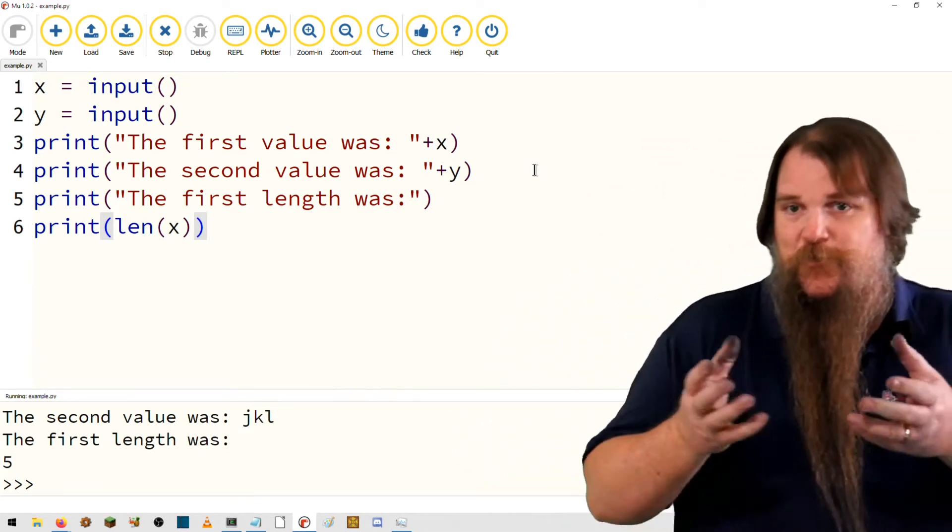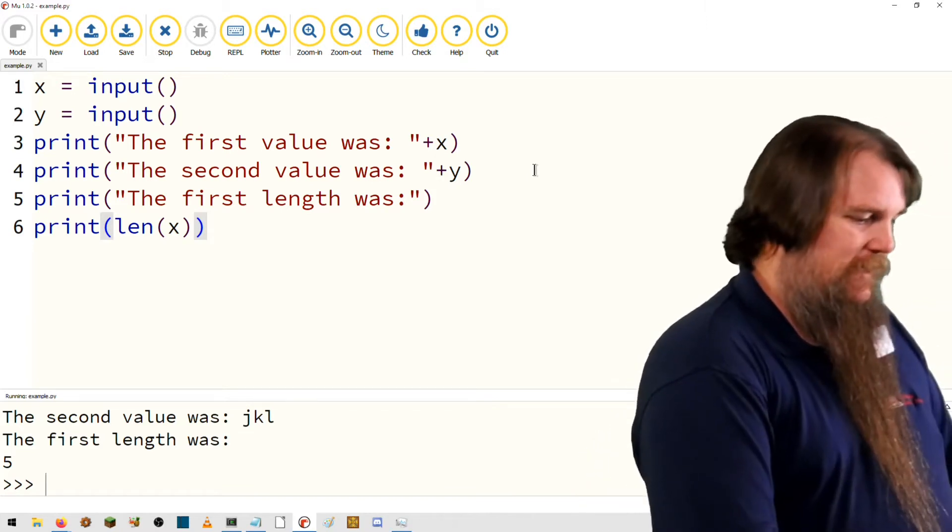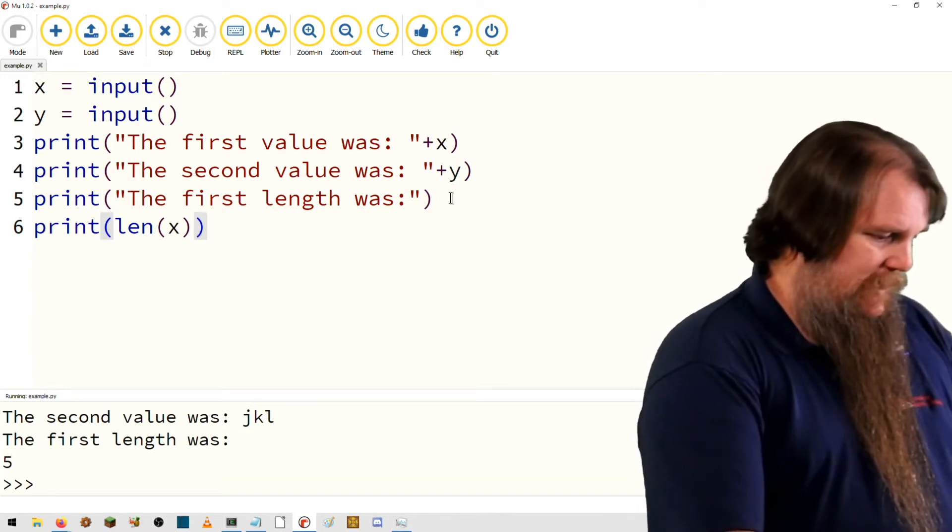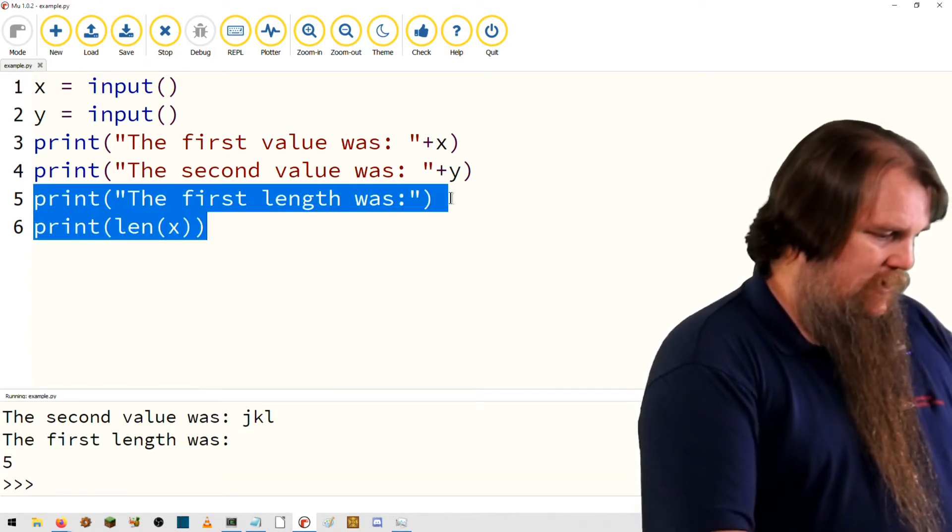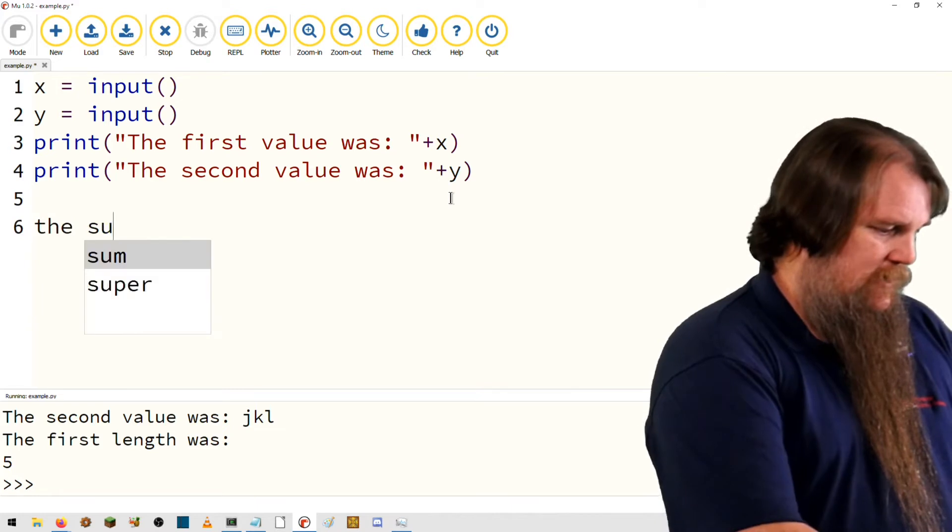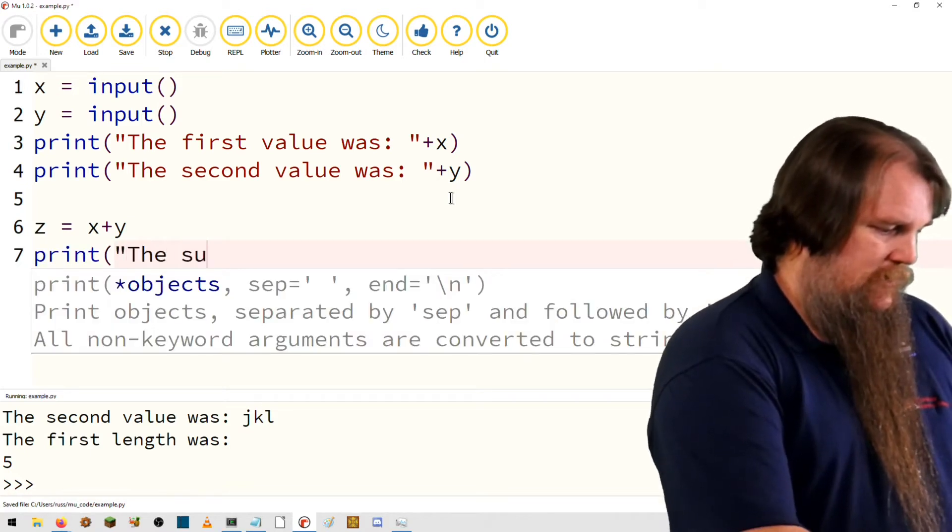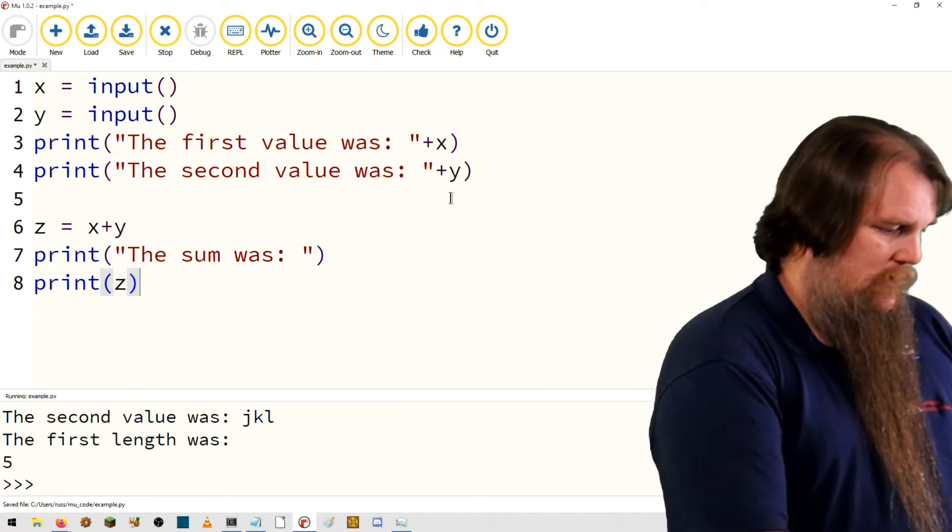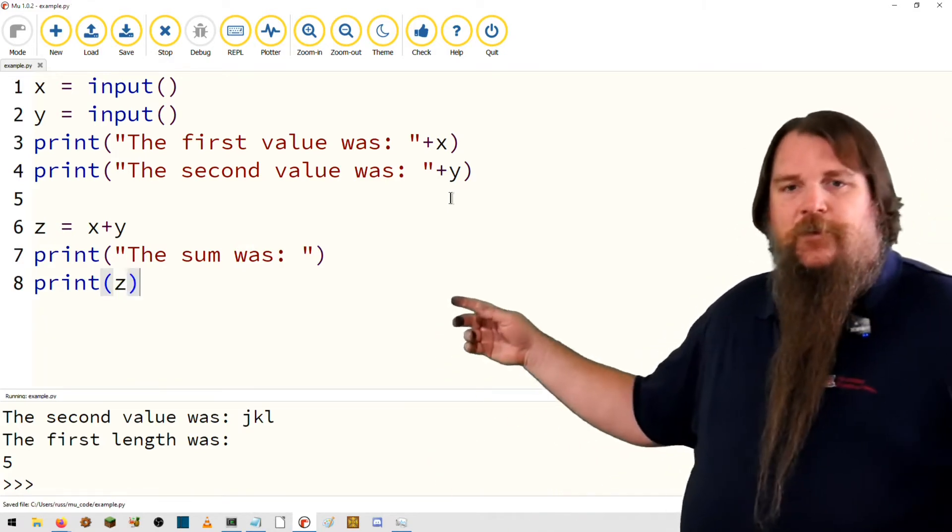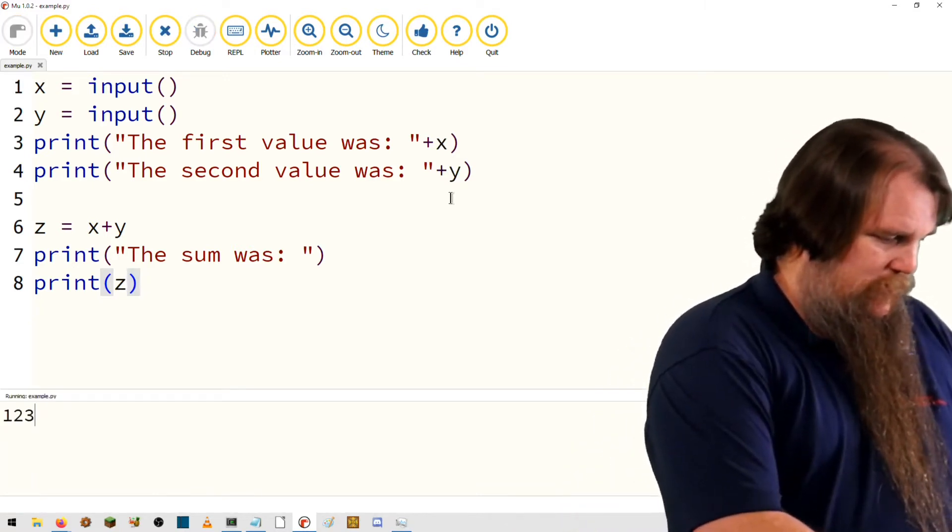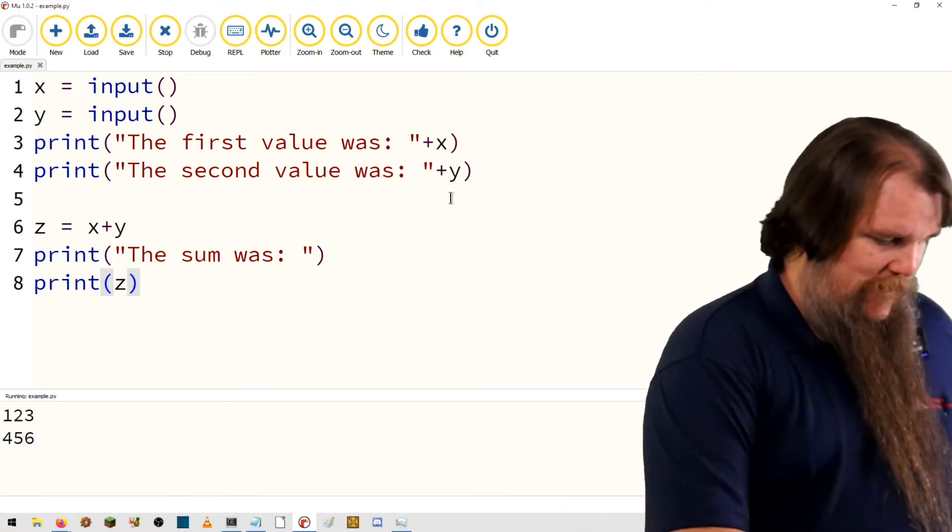What would we do if we wanted to do some processing? Let's imagine we're going to add these things together. Let's not think about length. We'll sum these: z equals x plus y, print the sum was. So we're going to print out the first value, the second value. Let's give it some numbers: one, two, three, four, five, six.